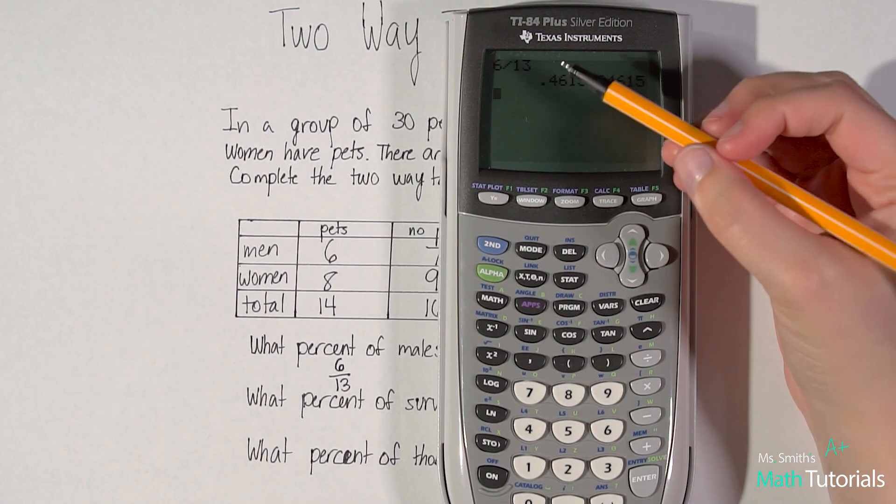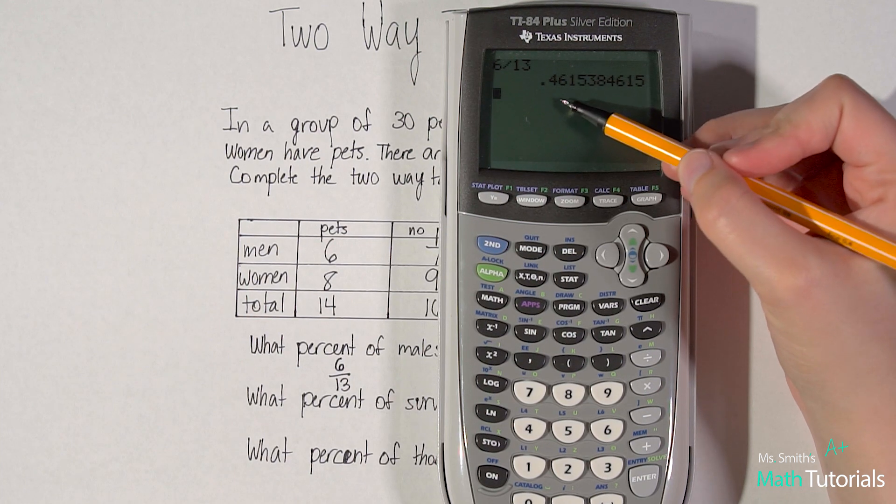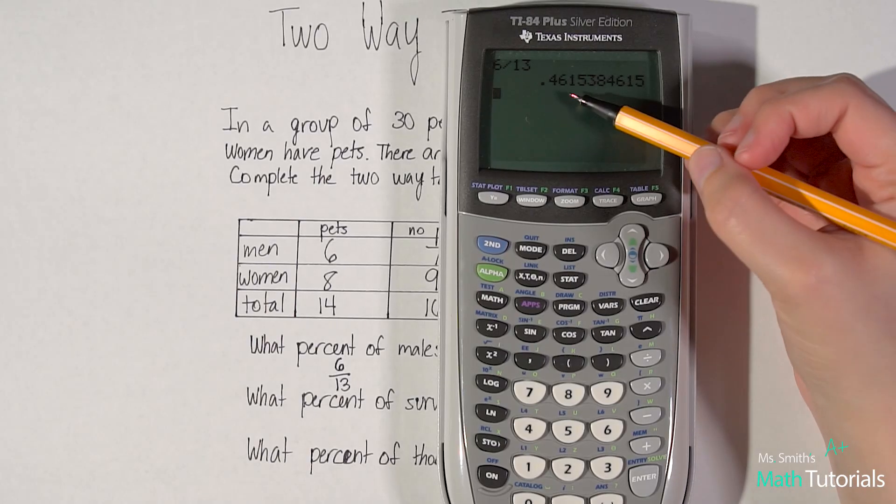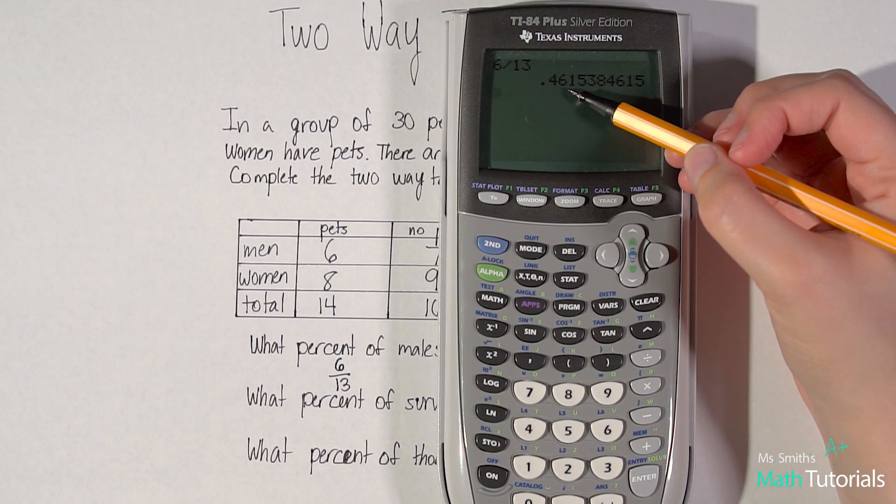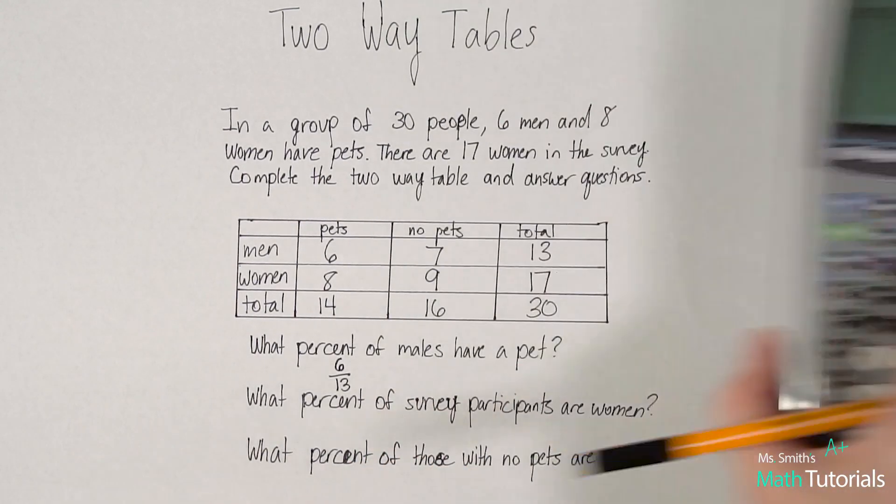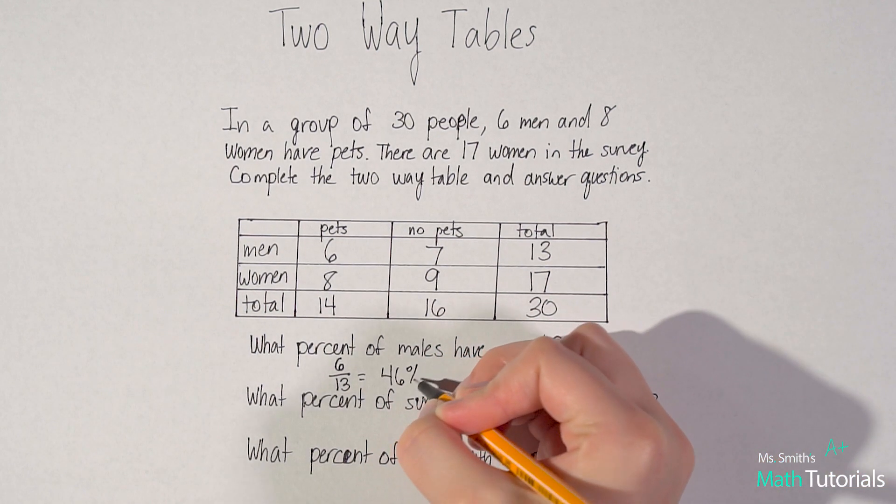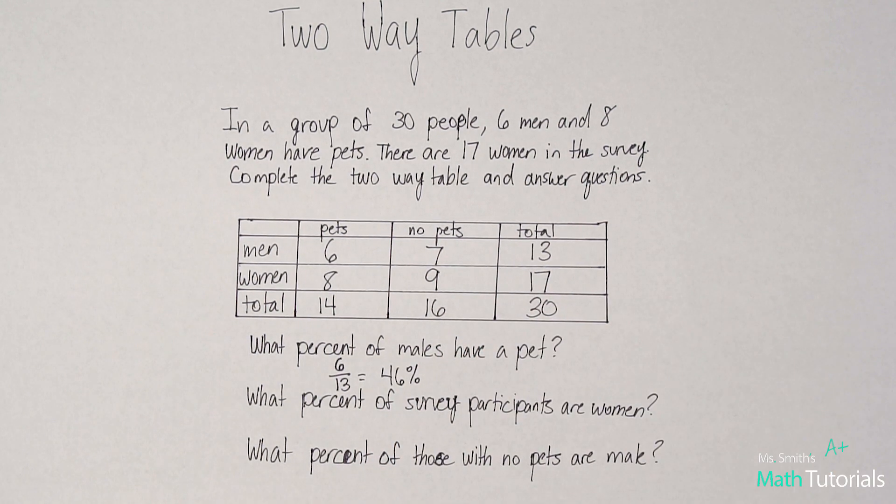So how we do that is we would take the decimal and we would move it over to the right two places. And then we'd round to just the nearest whole percent. So this would be 46%.